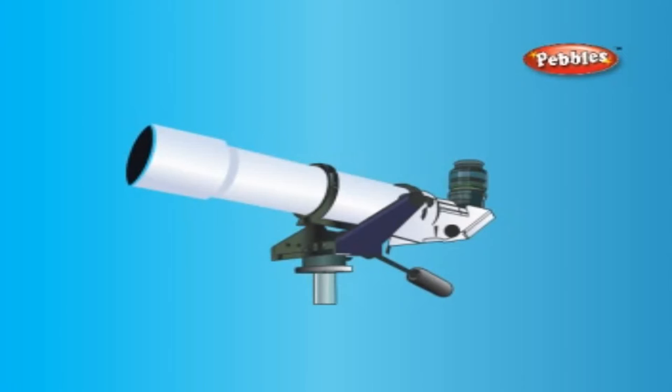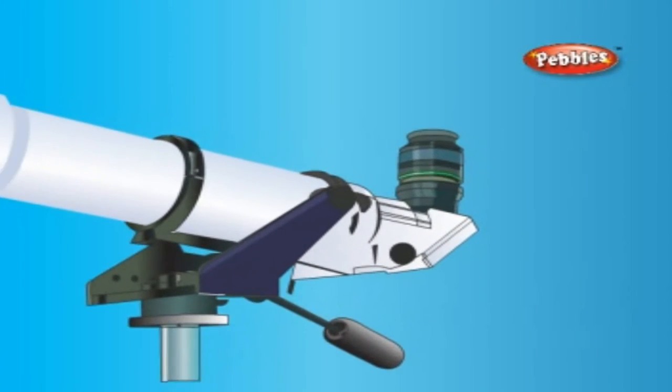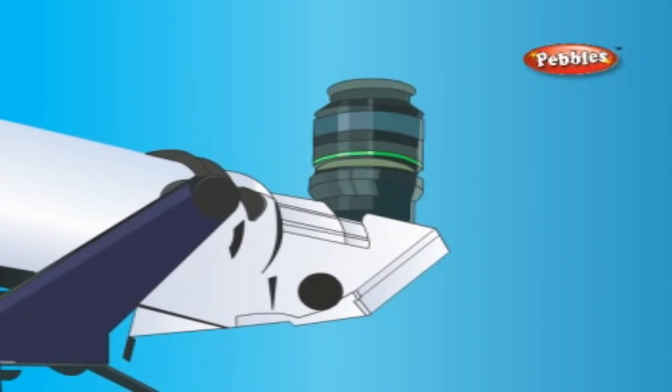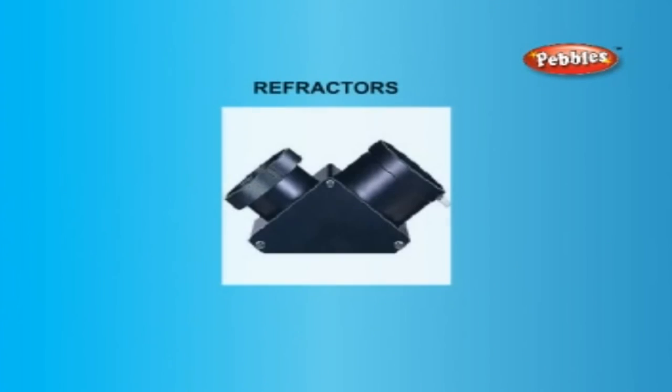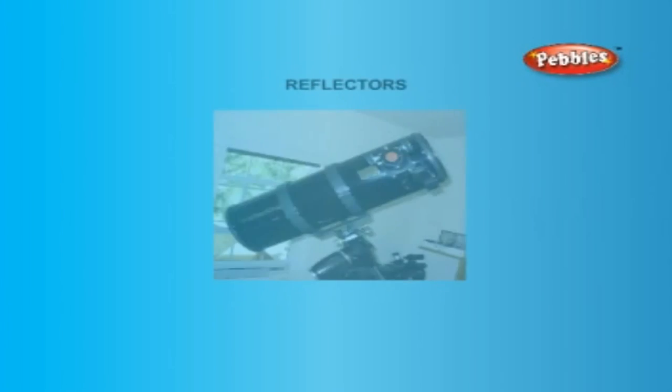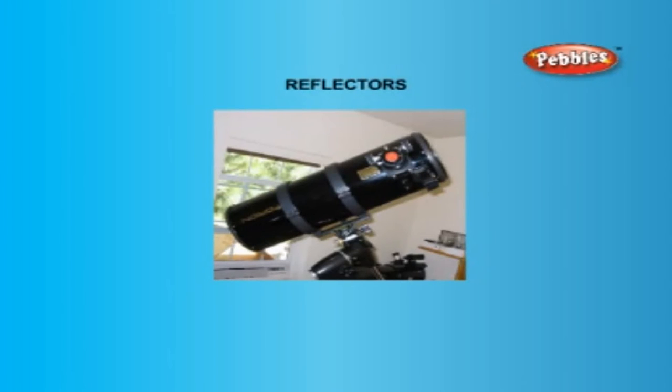Telescopes enable us, by means of prisms, lenses and mirrors, to make distant objects appear much closer. Today, we may distinguish between refracting telescopes and reflecting telescopes.